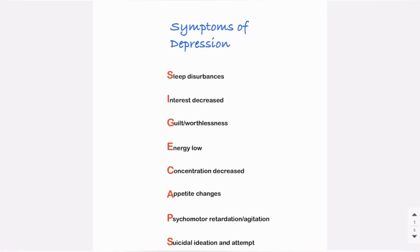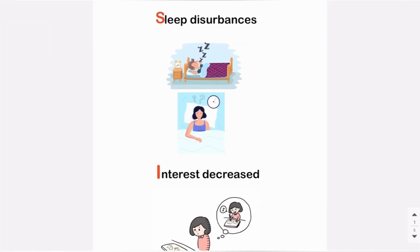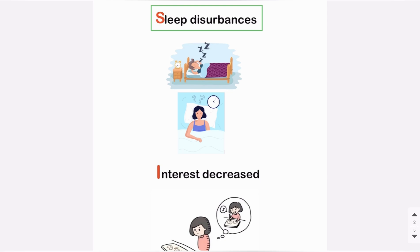Symptoms of depression can be memorized using the mnemonic SIGGY CAPS, where S stands for sleep disturbances. Patients with depression either sleep excessively or they may find it difficult to sleep.